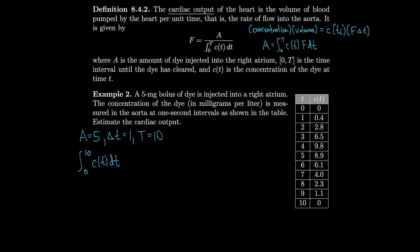How about we use Simpson's rule to approximate this. So we'll take Simpson's rule with n equals 10. Remember that that's delta t over three, so that's one third times our first f value. So that's c evaluated at zero, which is zero.